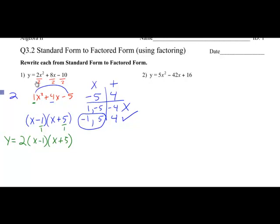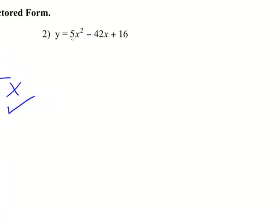The second topic I'm going to show is when I can't divide by that a value. I'm going to try it: take 5 divided by 5, negative 42 divided by 5, 16 divided by 5. Well, 5 divided by 5 is 1, but 42 divided by 5 doesn't work — it has to end in a 0 or 5 to be divisible by 5. So that's not going to work.